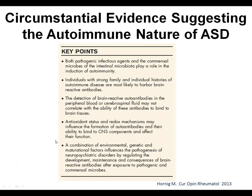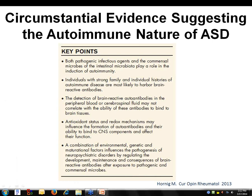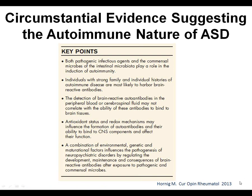In conclusion, the key points are: both pathogenic infection and commensal organisms seem to be involved in induction of autoimmunity. Individuals with a strong family history of immune disease are more likely to have brain-reactive antibodies. Autoantibodies in peripheral blood tests and cerebrospinal fluid have been identified in autistic kids. Antioxidant status and reduction mechanisms may influence the formation and action of these autoantibodies. The combination of environmental, genetic, and maturational factors seems to be impinging on pathogenic disease.